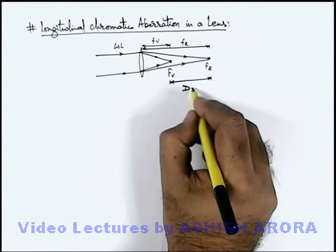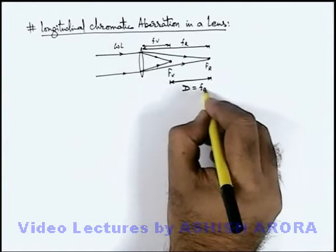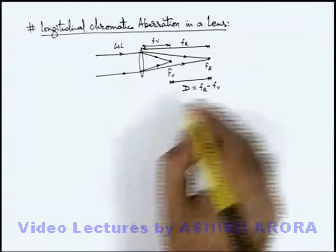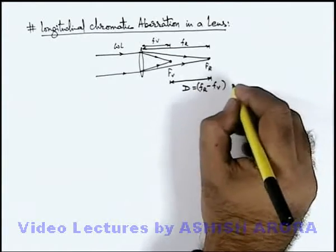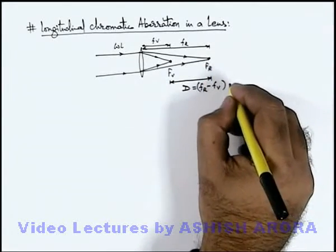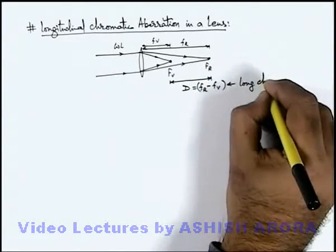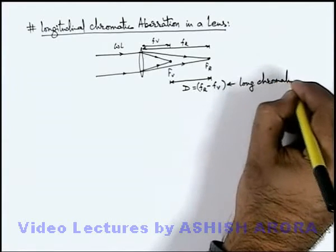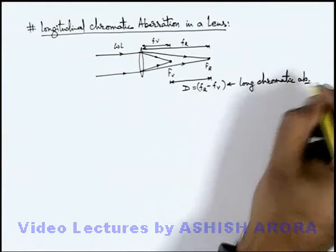written as d and this spread can be written as f_r minus f_v. This separation or spread of the focal point we call longitudinal chromatic aberration by the lens.